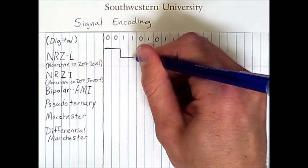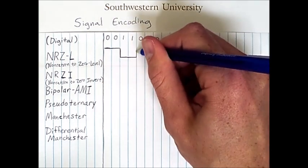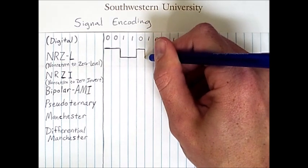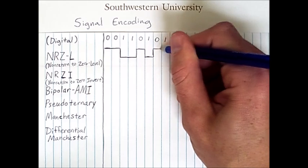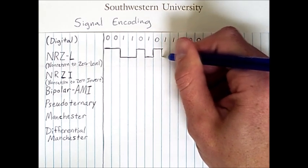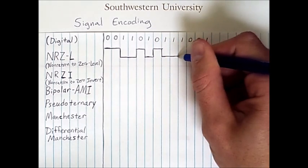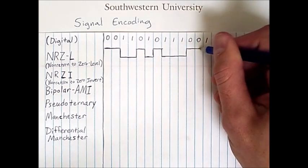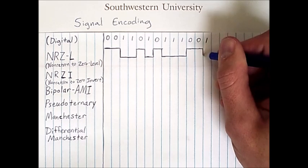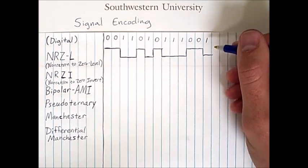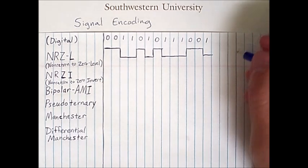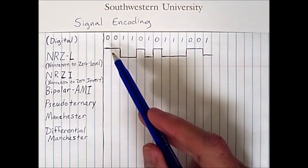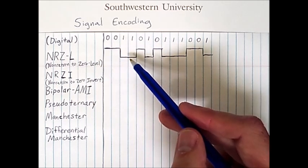The next one is that same lower level, then we go up again for the zero, down for one, up for zero, down for one, and we stay down for the sequence of ones, then up again at the end for some zeros, and then a final one at the end. This is a straightforward encoding scheme — looking at the signal, the high values are zeros and the low values are ones.